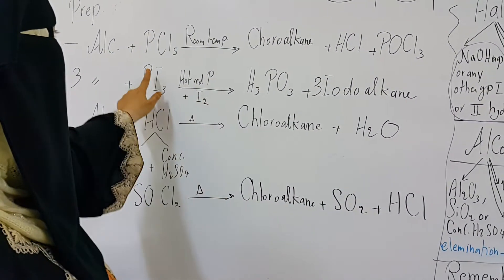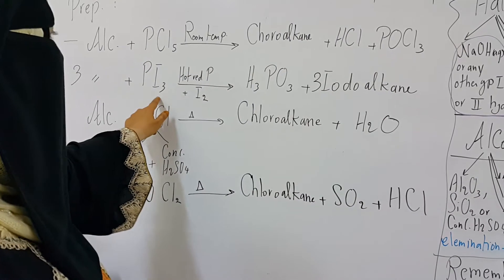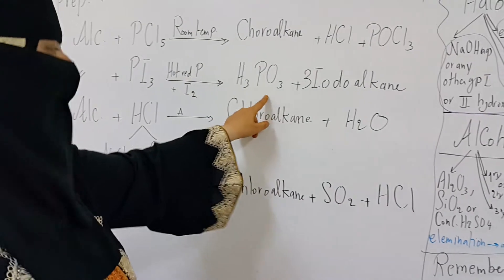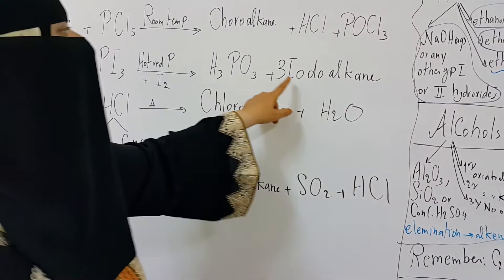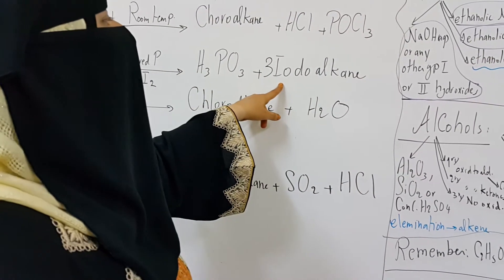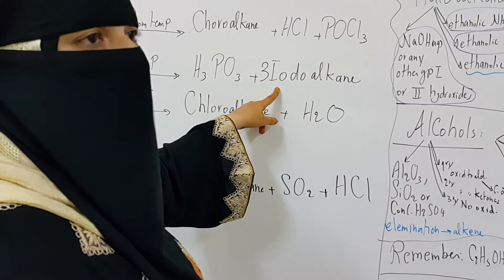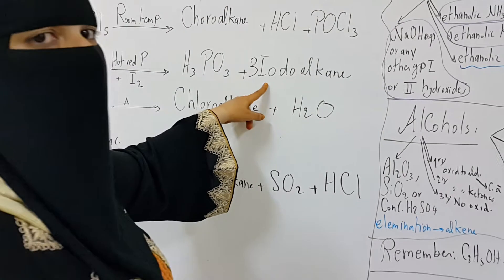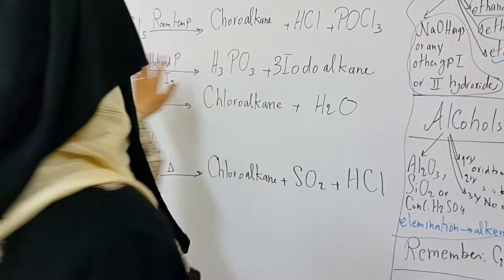Alcohol can also react with hot red phosphorus and iodine, which together form phosphorus triiodide, to give phosphorous acid and three molecules of the iodo-alkane.